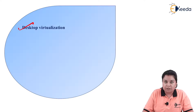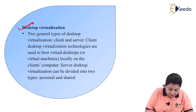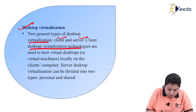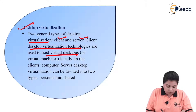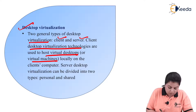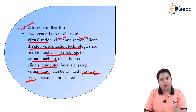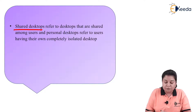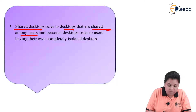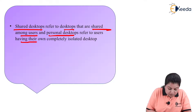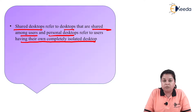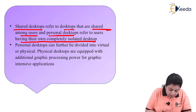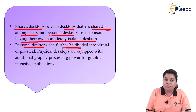The next domain is desktop virtualization. Two general types of desktop virtualization are client and server. Client desktop virtualization technologies are used to host virtual desktops or virtual machines locally on the client's computer. Server desktop virtualization can be divided into two types: personal and shared. Shared desktops refers to desktops shared among users, and personal desktops refers to users having their own completely isolated desktop. Personal desktop can further be divided into virtual or physical.